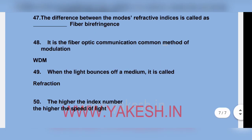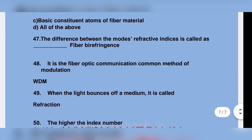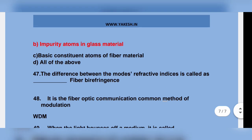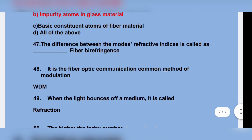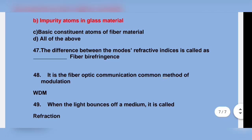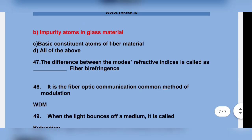Just to go through this question again: when light bounces off a medium, it is called reflection. In fiber optic communication, the common method of modulation is WDM. The difference between the modes' refractive index is called fiber birefringence.